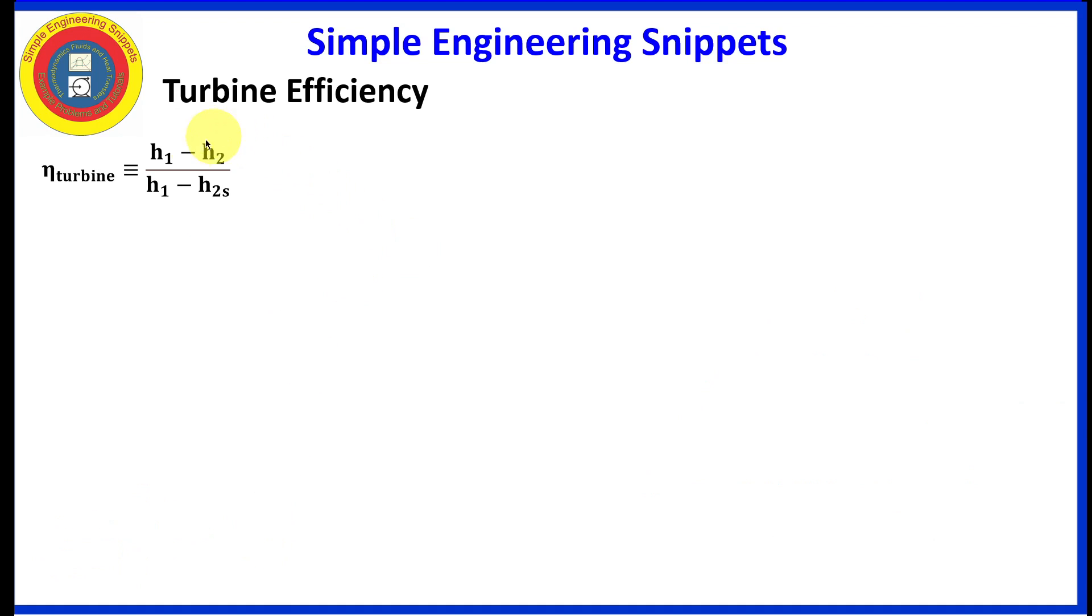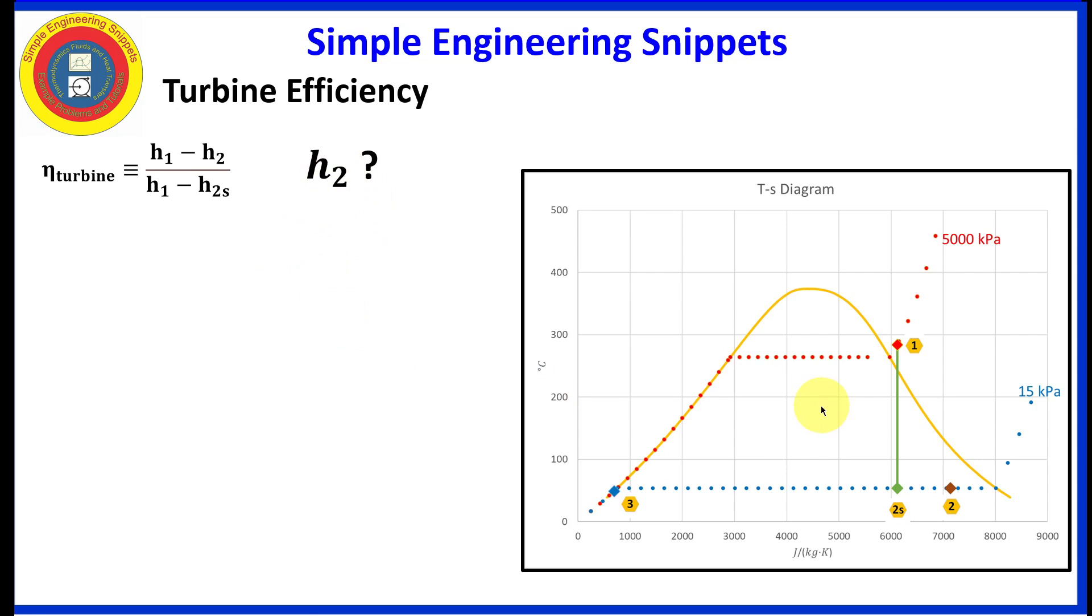We're not done yet. We still need to find the enthalpy at point two. So let's revisit our temperature entropy diagram. And I've sketched in where we expect point two to occur. We expect it to be right of point 2S. Why is that? In a real process, it's not going to be isentropic. Entropy is going to increase. And so point two, we expect to be to the right of point 2S. But we do know it's on the 15 kilopascal isobar.